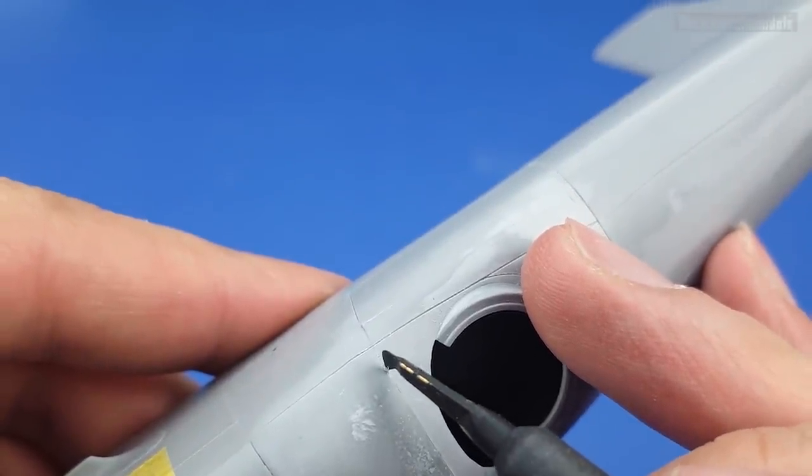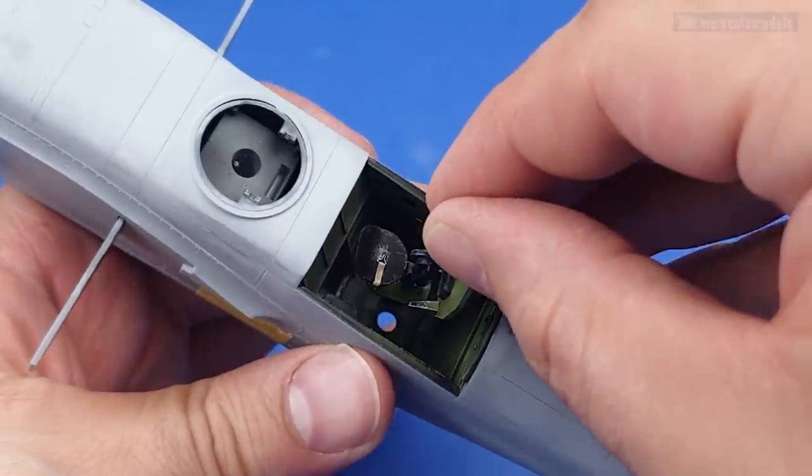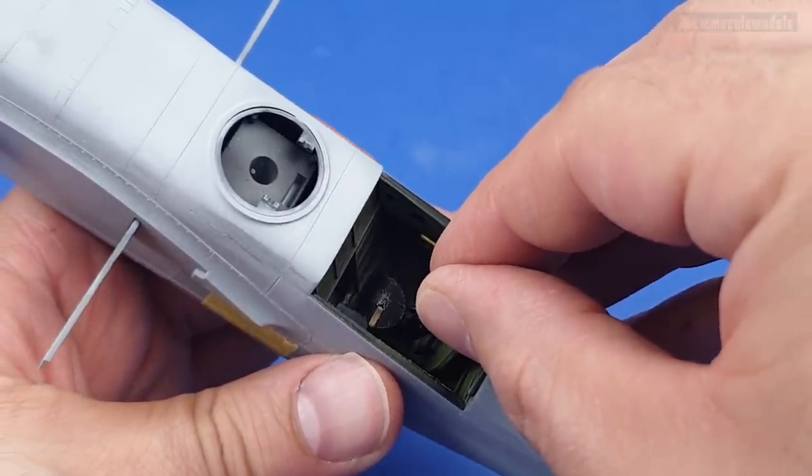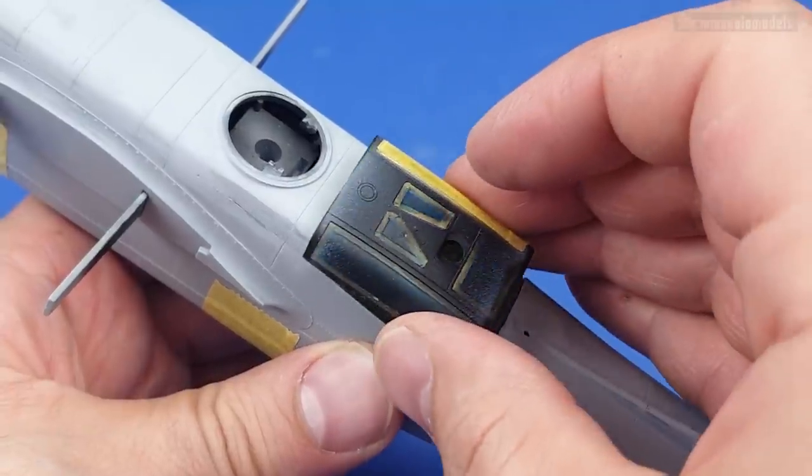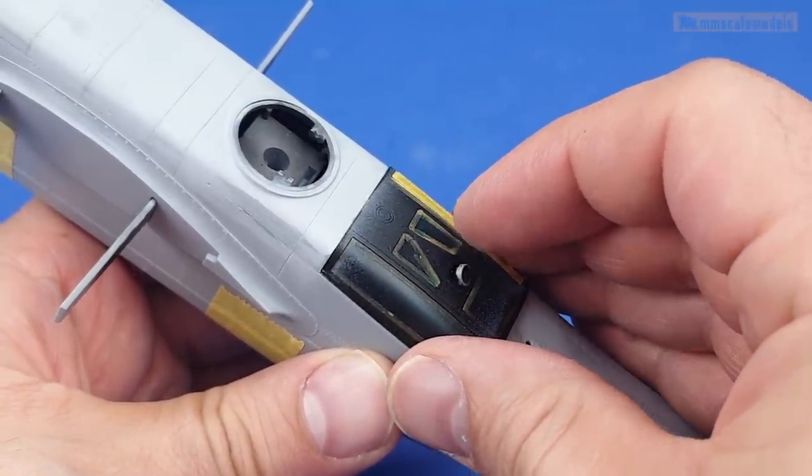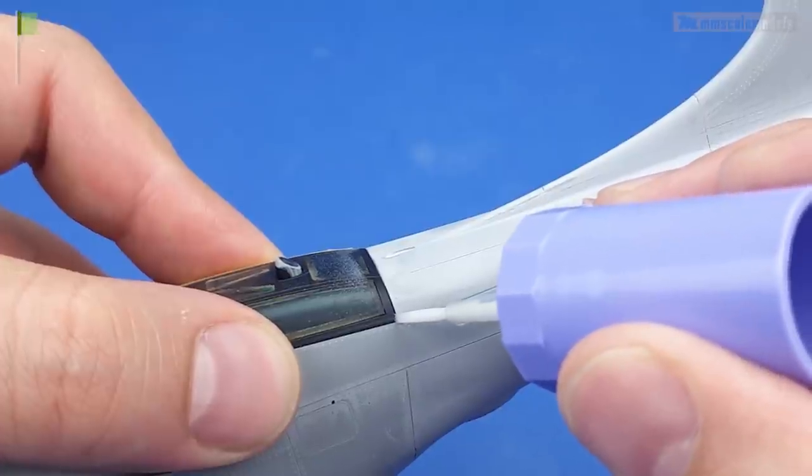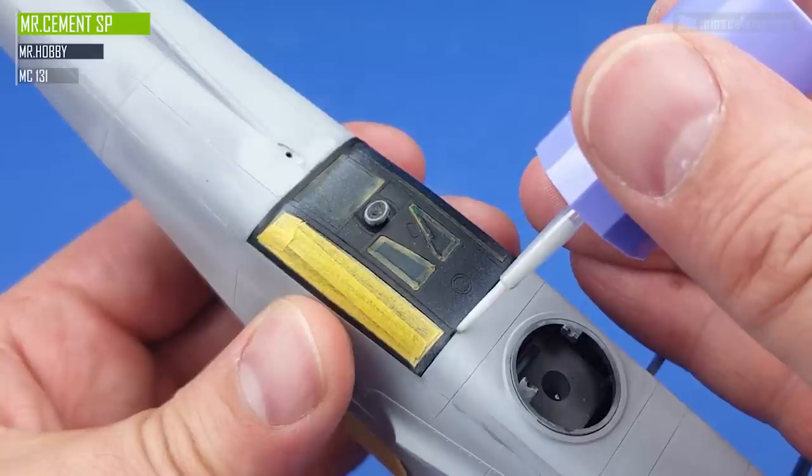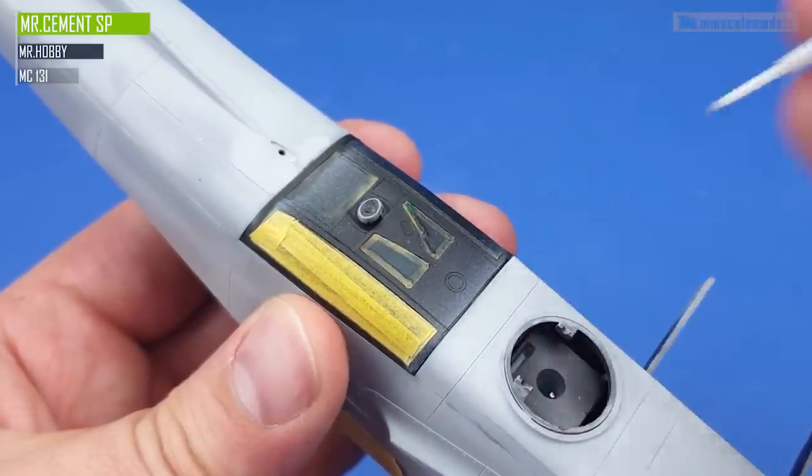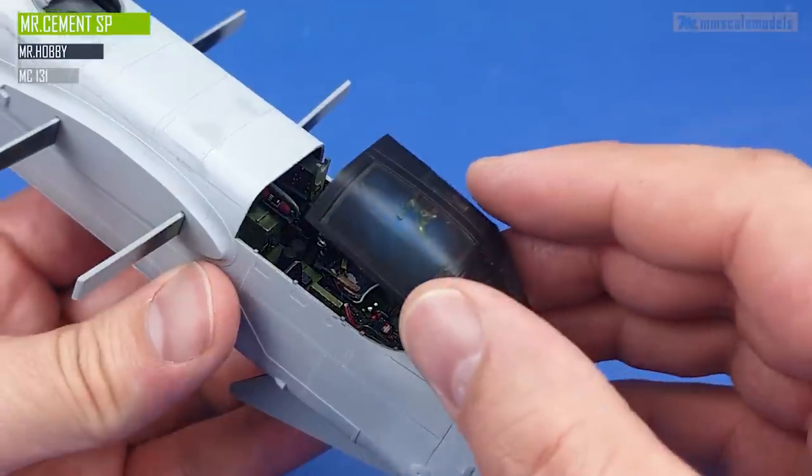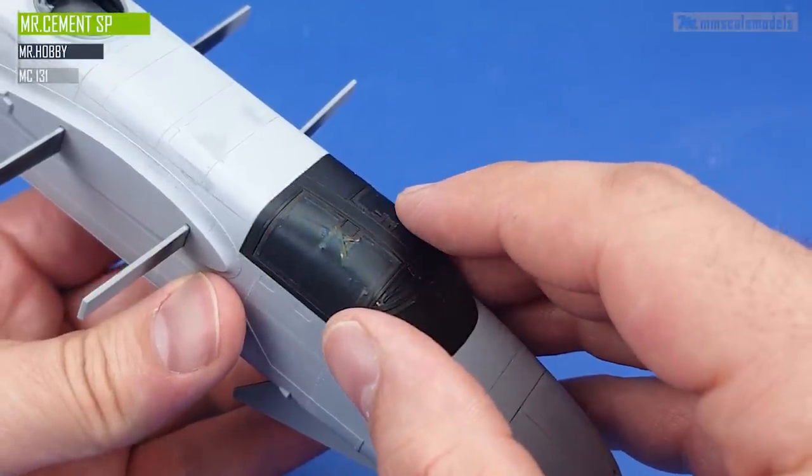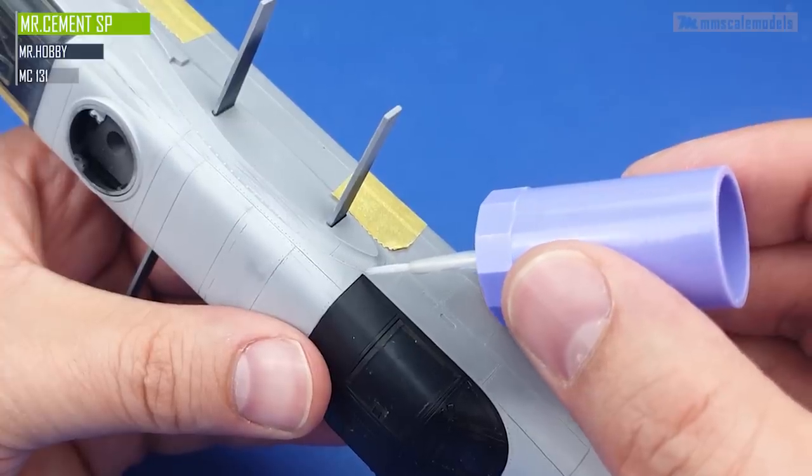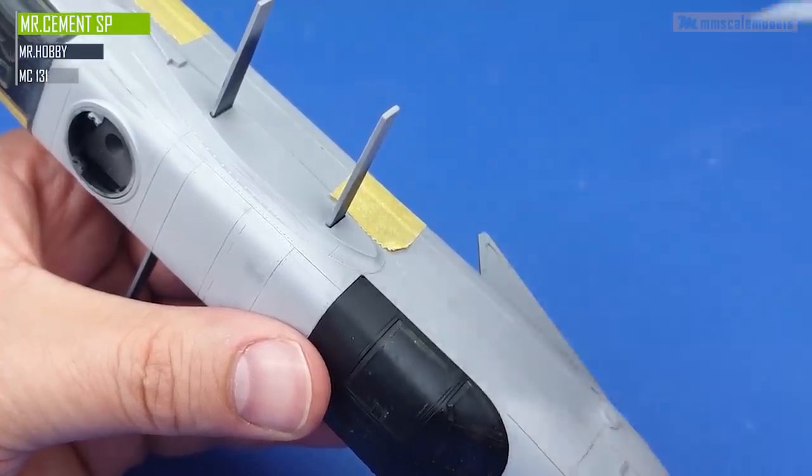First order of business is to insert the aiming station into the gunner's compartment and fix it in place with the canopy. I am not going to glue the gunner station just yet. The fit of both canopies is good, partially due to the kit itself but in some areas due to the work we did earlier. However, when I apply the primer I may be proven wrong, we'll see.